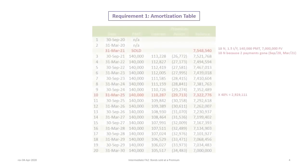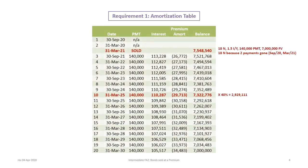We'll start with the amortization table, which is very similar to the previous tutorial with changes around the interest rate. Bonds were issued April 1st 2020 but not sold until March 31st 2021 — a whole year has passed, so two payments are gone, leaving 18 payments (18N). The yield rate is three percent, divided by two to get one and a half percent per period. The payment is still $140,000 because the face rate and face value of seven million have not changed.